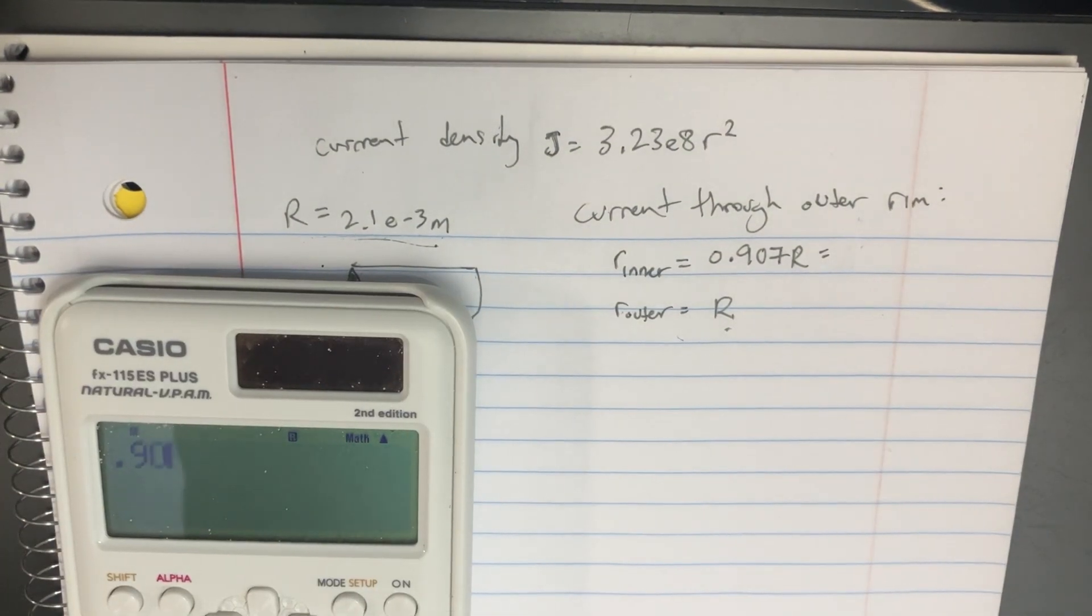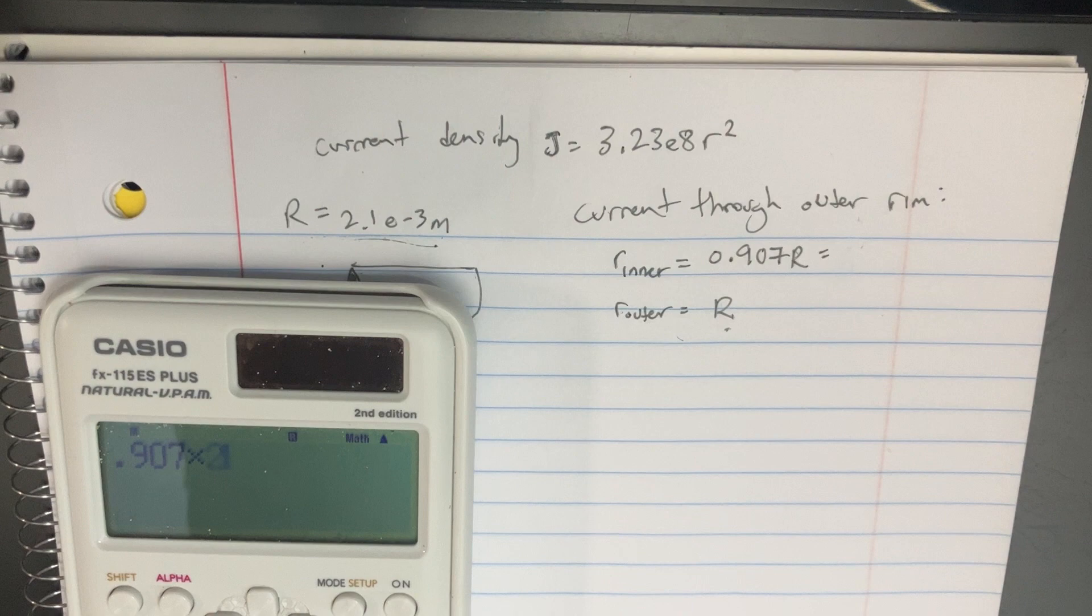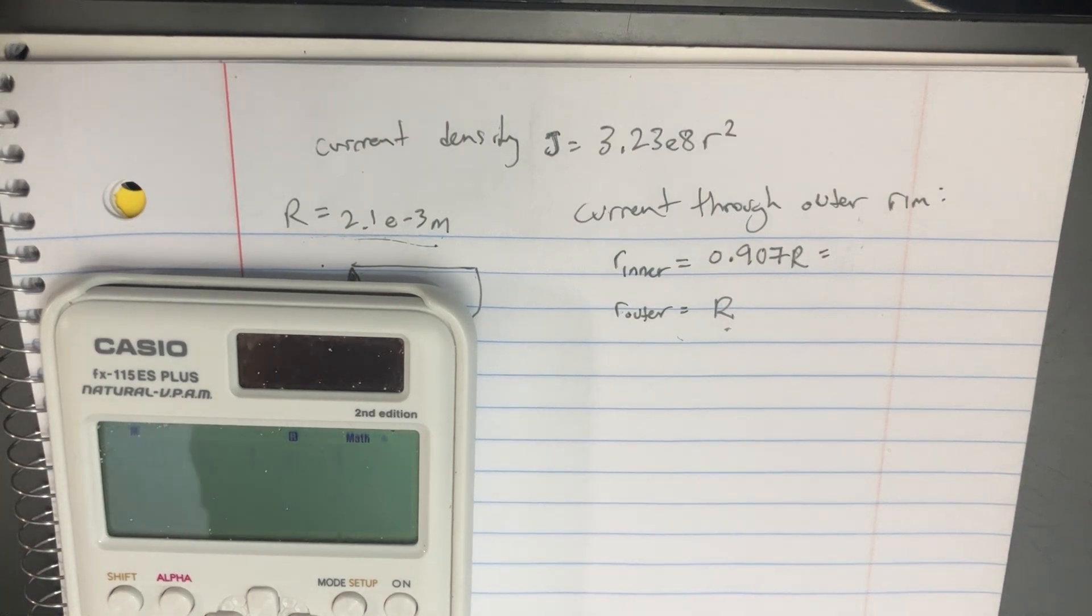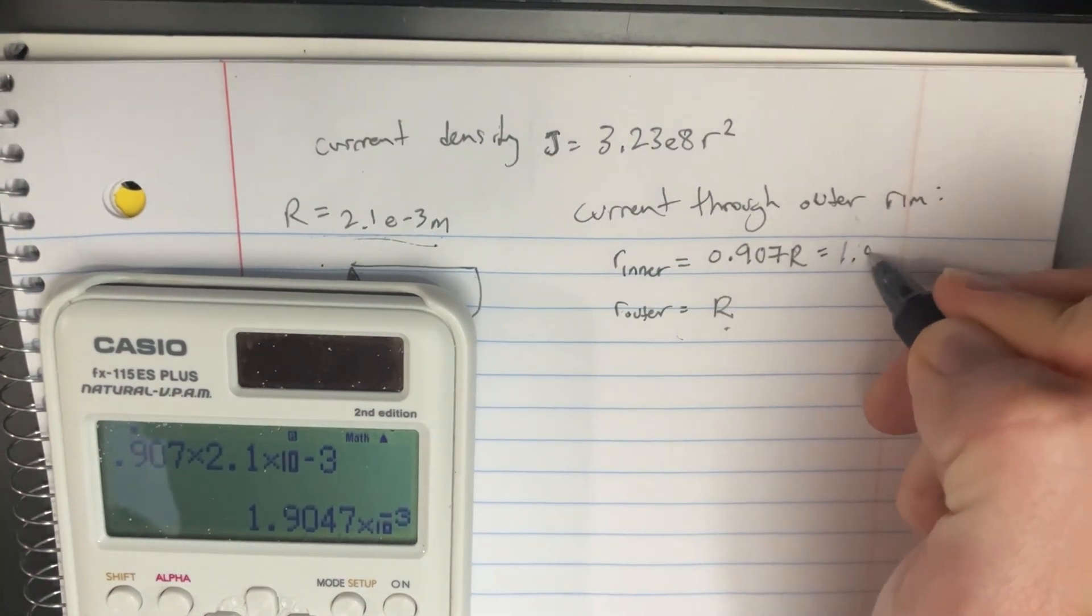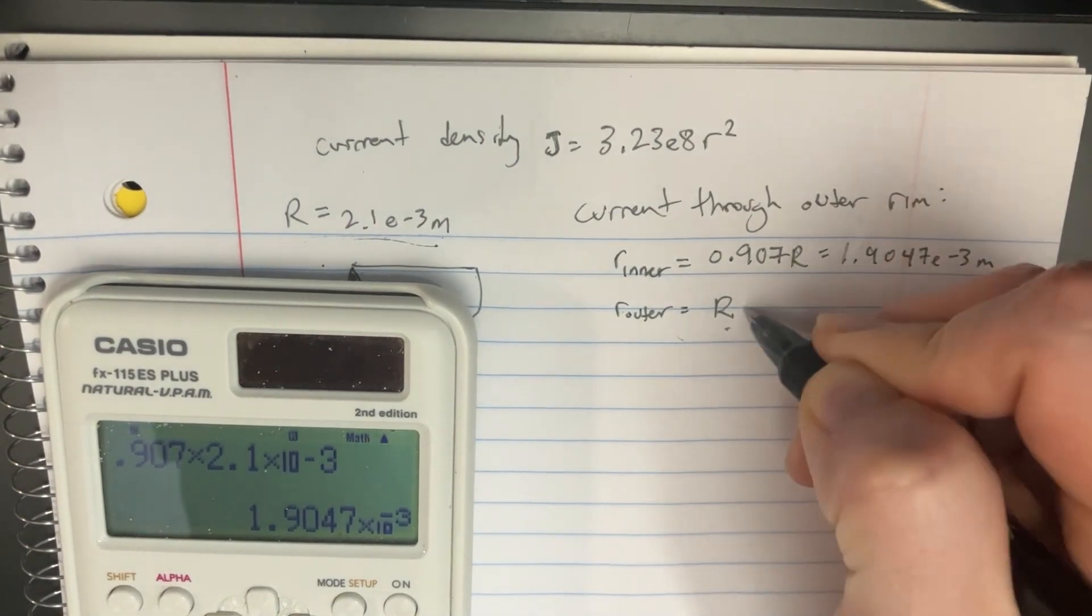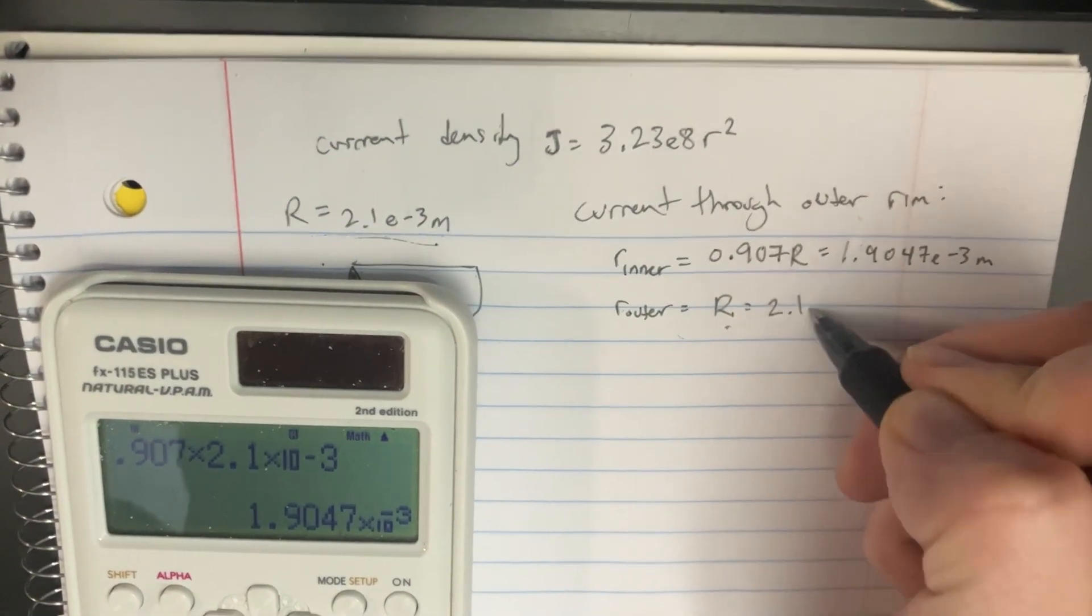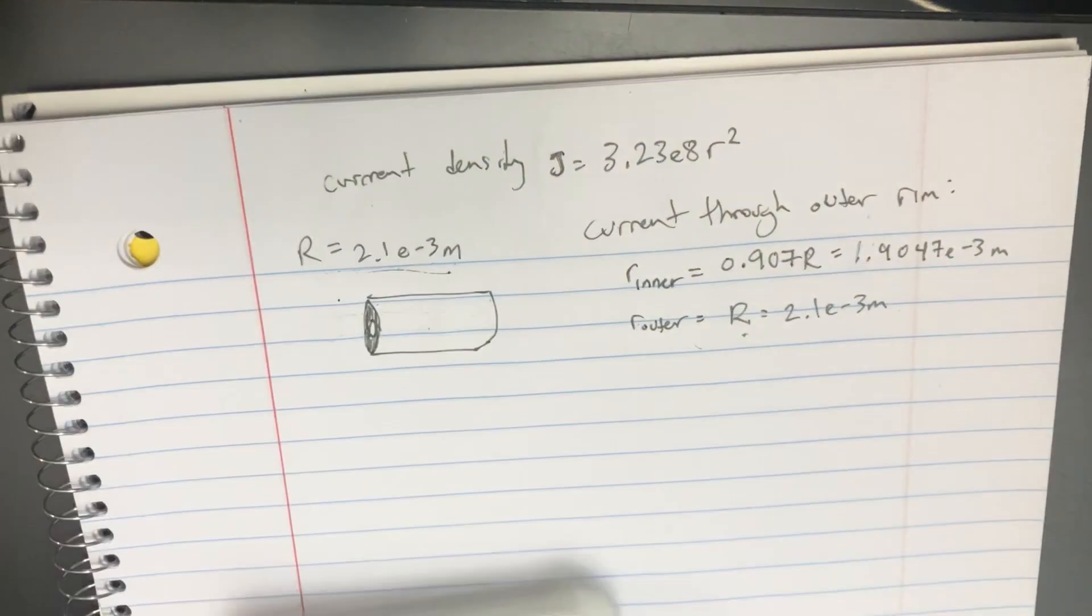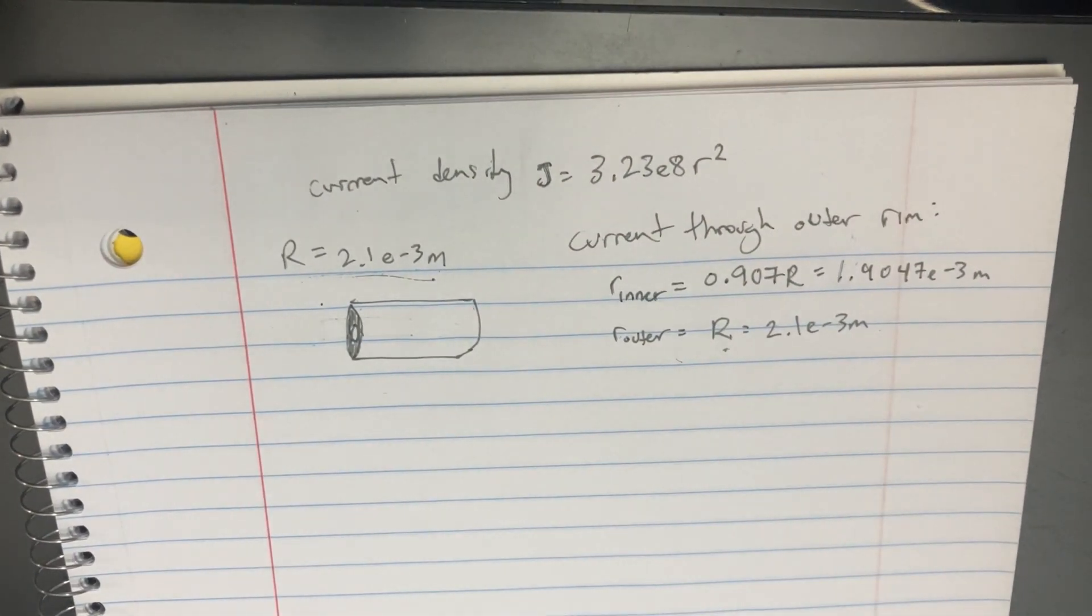The smaller radius is 0.907 times 2.1e-3, which is 1.9047e-3 meters, and this one is supposed to be just 2.1e-3 meters. So we have those things converted.